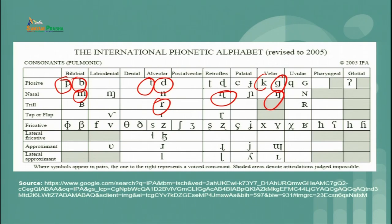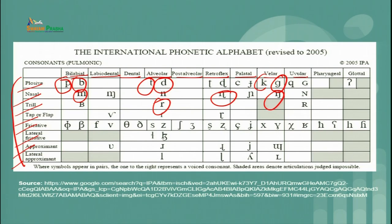You will find different types of consonants, and on the left-hand side of the IPA chart it is written: plosive, nasal, trill, flap, fricative, lateral fricative, approximant, lateral approximant — these refer to the manner of articulation. Reading the chart horizontally, you will find: bilabial, labiodental, dental, alveolar, post-alveolar, retroflex, palatal, velar, uvular, pharyngeal, glottal — which denote the place of articulation. These technical terms will be discussed in the next slide.